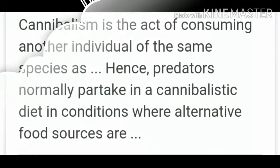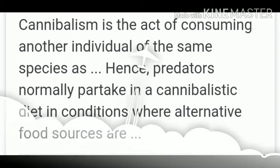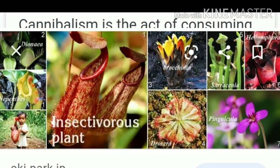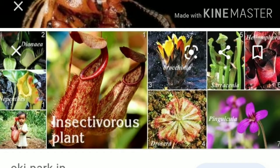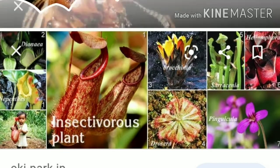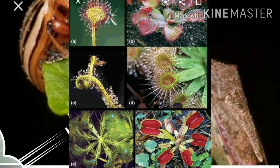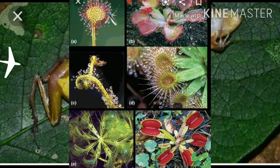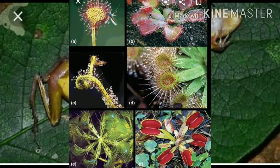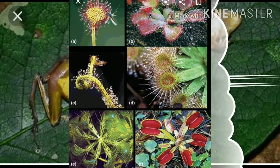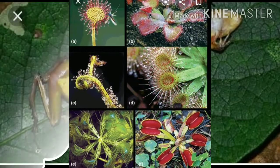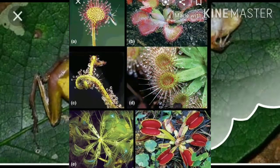Besides animals, there are some plants which feed on animals. Insectivorous plants such as Nepenthes, Pitcher plant, Drosera, Utricularia, Dionaea, and Butterwort consume insects and other animals for their food. These plants are adapted in remarkable ways to attract, catch, and digest their victims. Their leaves or foliar appendages produce a proteolytic enzyme for digestion of insects.